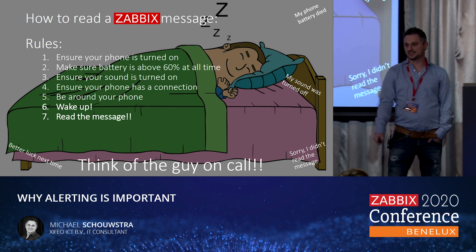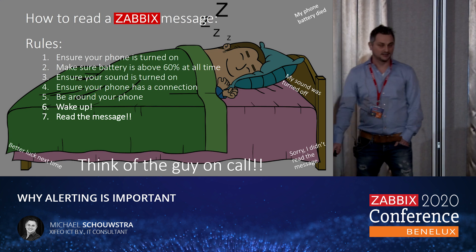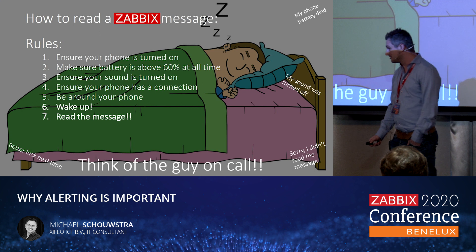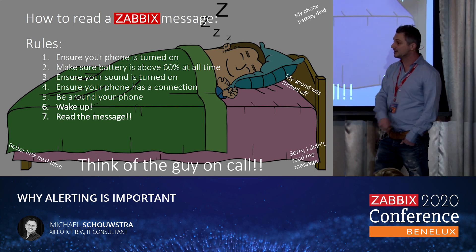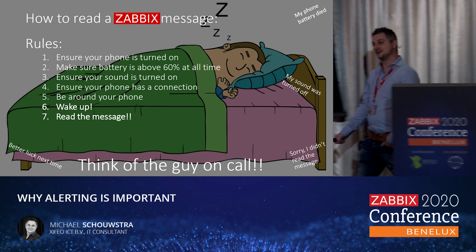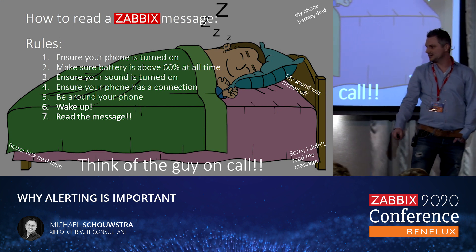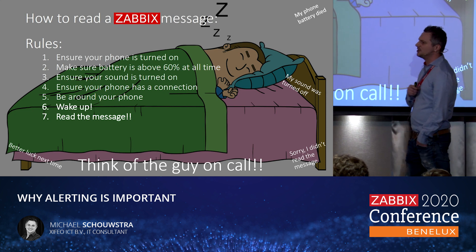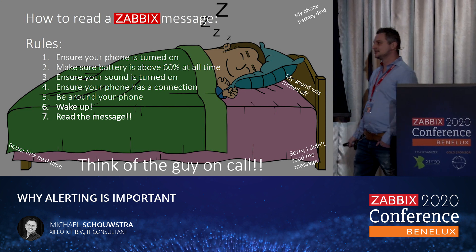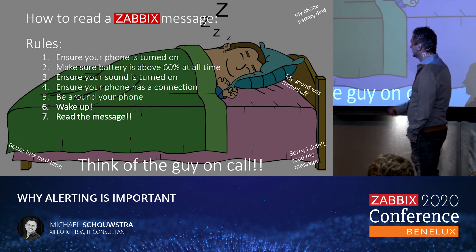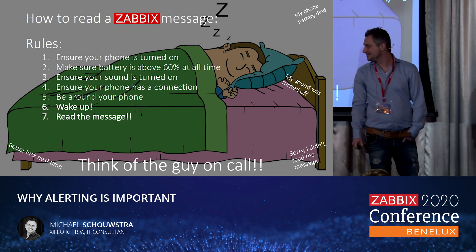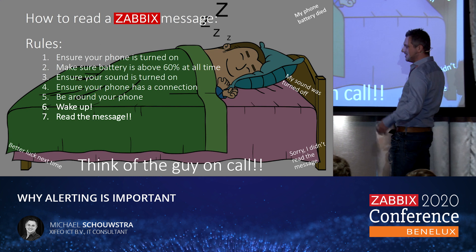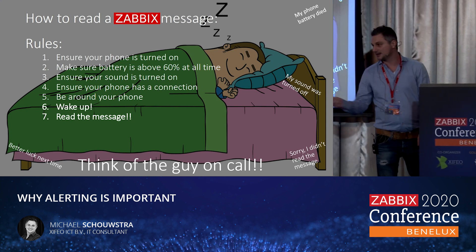Think of this guy — he's sleeping, really deeply sleeping. Some rules for when you are the on-call person and asleep: ensure your phone is turned on, make sure your battery is at 60% at all times, ensure that it has a connection, be around your phone. That's an important part when you are the one on call. And wake up, because when you are asleep you're not able to read a message. Read the message — what is it telling you? Not just 'I received one of the 500 messages.' Minimize the amount of messages and pinpoint it to the right problem.